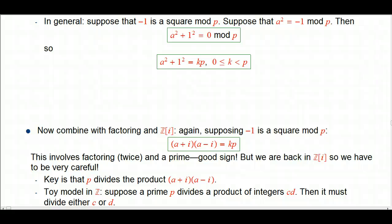Let me make a comment about what we've done. We've taken the problem of, given a particular prime, can it be expressed as a sum of squares? And we're trying to relate that to another problem: is minus 1 a square modulo that prime p. And often in mathematics you'll see two problems, one shown to be equivalent to the other.